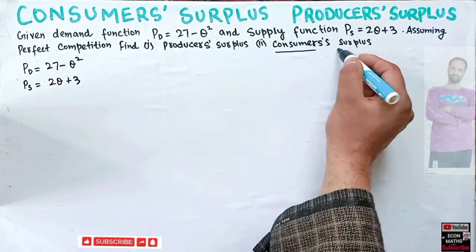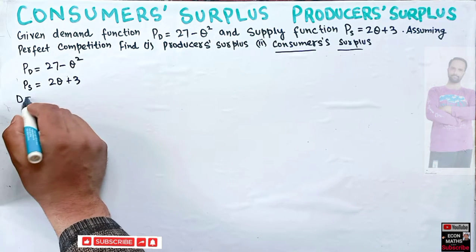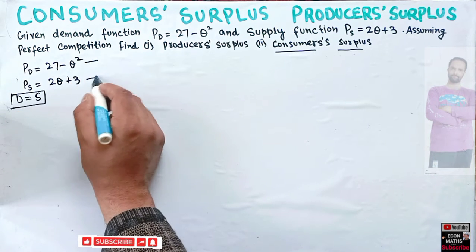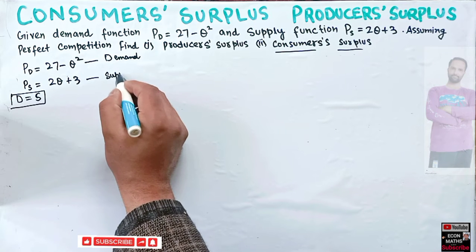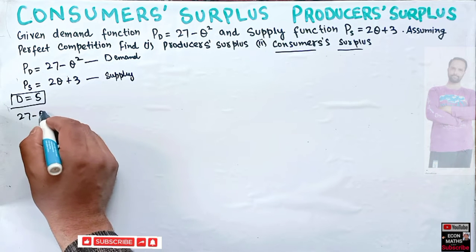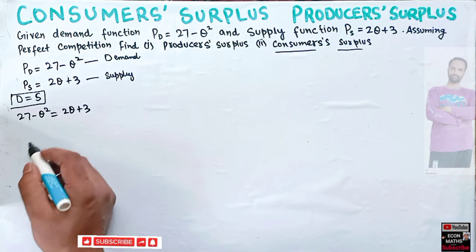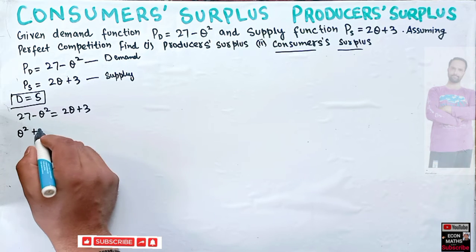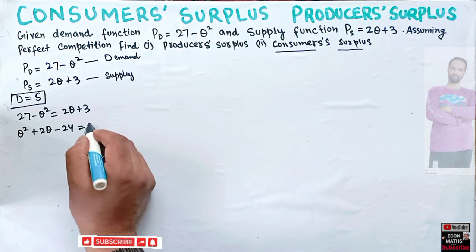First we will calculate consumer surplus. At equilibrium, demand equals supply. So we equate the demand function and the supply function: 27 minus Q squared equals 2Q plus 3. Solving for Q, we transpose terms: Q squared plus 2Q plus 3 minus 27 equals zero, giving us Q squared plus 2Q minus 24 equals zero.